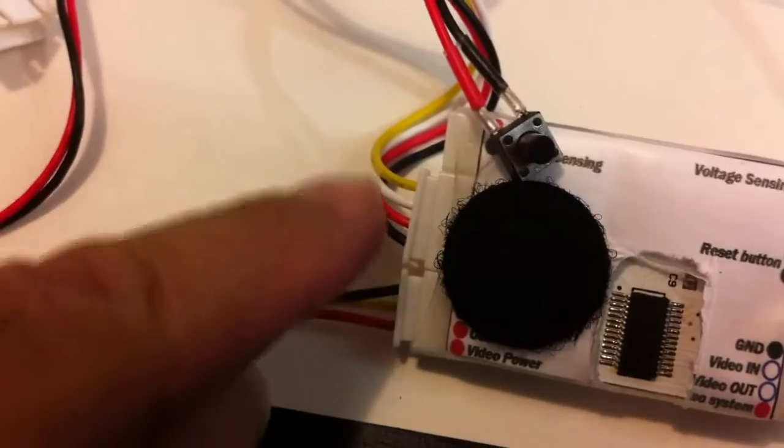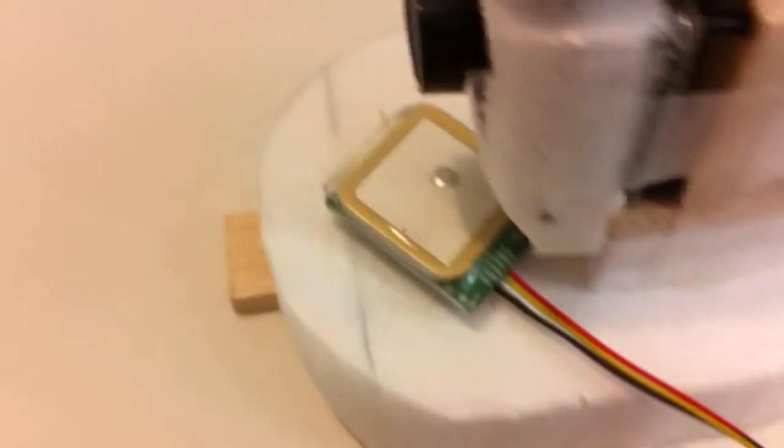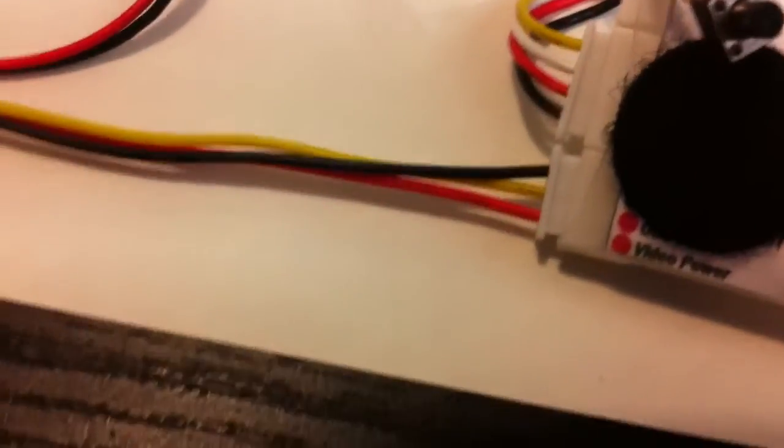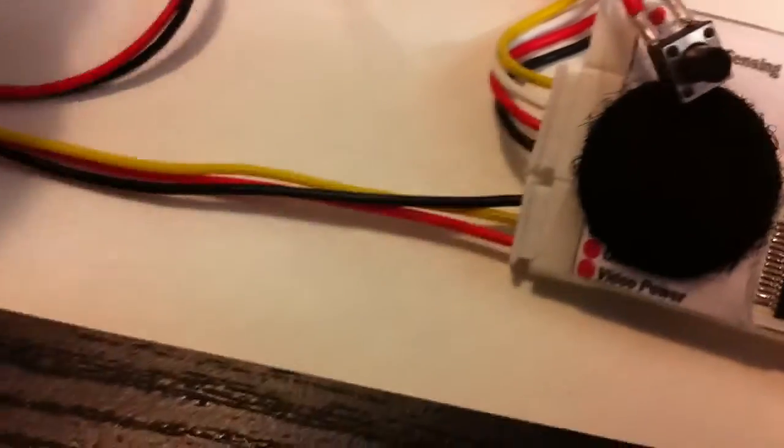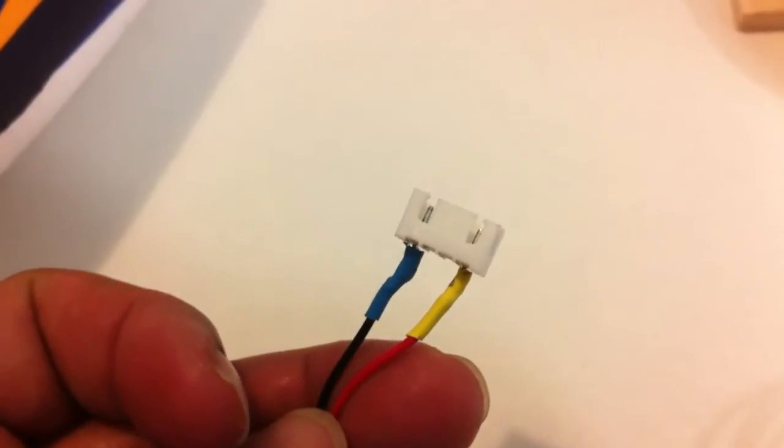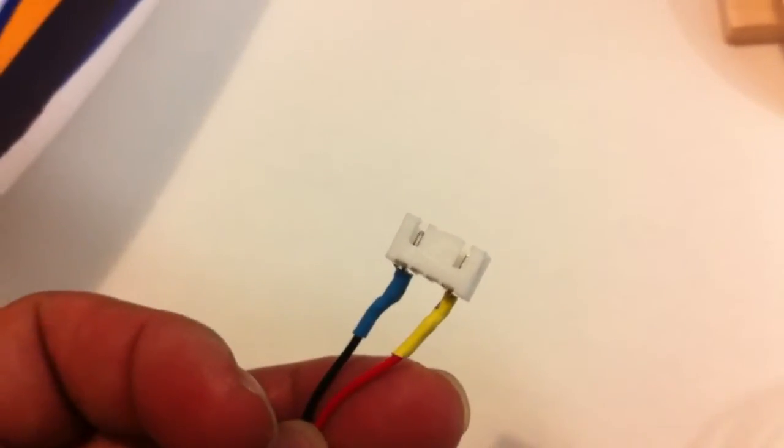And down this end, this connector here which is kind of covered goes straight to the GPS system. And what we also have is the positive and negative here, if you follow that all the way through that's where it ends up. That will basically plug into your balance connector on your battery and that'll basically power the whole system.